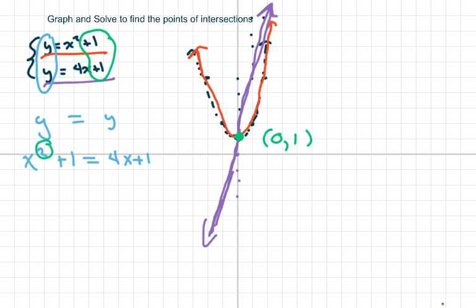we're going to move everything over to the left. x² - 4x and those ones will zero out. Do your greatest common factor and you get this.